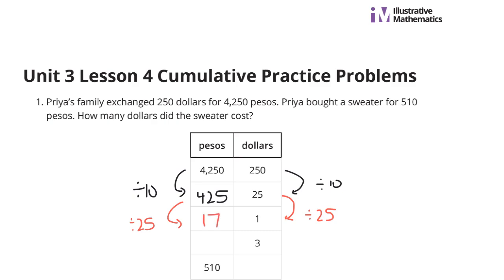And now, we can go from 1 to 3. Here, we'll multiply by 3. 17 times 3, 21. And we get 51. So 51 pesos for $3.